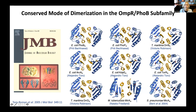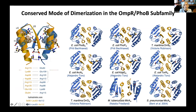Dimerization of receiver domains is a common mechanism for activation of response regulator transcription factors, and many different modes of dimerization have been observed in different response regulators. The OmpR/PhoB family, which accounts for about half of response regulator transcription factors, is unique in having a conserved mode of dimerization mediated by the alpha-4, beta-5, alpha-5 face. This conserved interface involves a highly conserved set of salt bridges and a small hydrophobic patch present in all receiver domains of OmpR/PhoB family members.